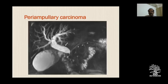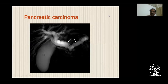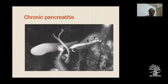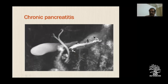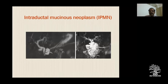For peri-ampullary carcinoma, you have a dilated CBD and intrahepatic biliary radicals while the pancreatic duct is normal - this pattern should raise suspicion. In pancreatic carcinoma, the classic double duct sign is well demonstrated on MRCP. In chronic pancreatitis, you get a lot of stricturing with irregular branch ducts, narrowing, calcifications, and calculi within the pancreatic duct - the duct is also dilated - which together with other sequences helps in the diagnosis.